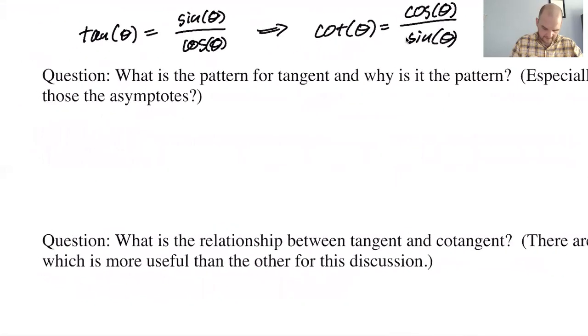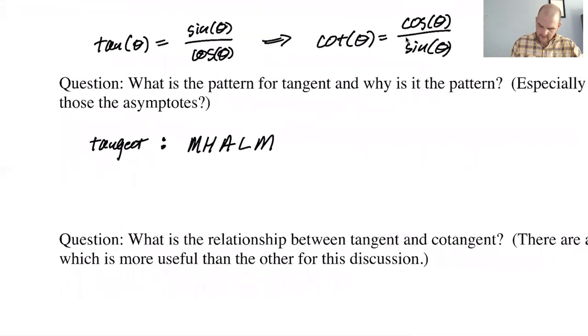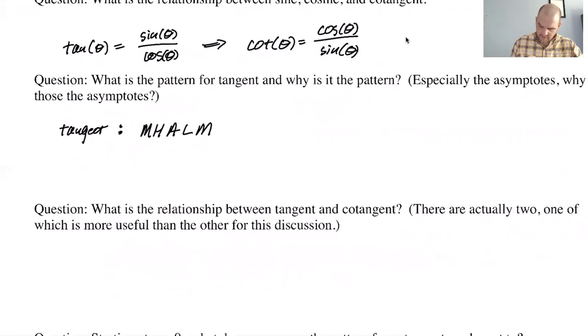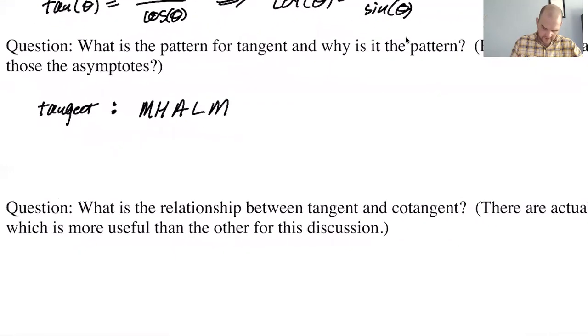So tangent, I'm doing the one that starts at the start. It's middle, high, asymptote, low, middle. That's what we get. Now, why do we get the asymptote?